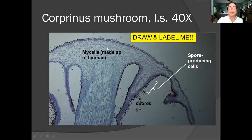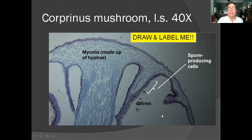Those are the hyphae all up in here. On the underside of the cap you see those spore-producing cells — these little long skinny regions — and you can see some of the spores being released. Pause here for a few minutes and draw what you see and label as you see it.